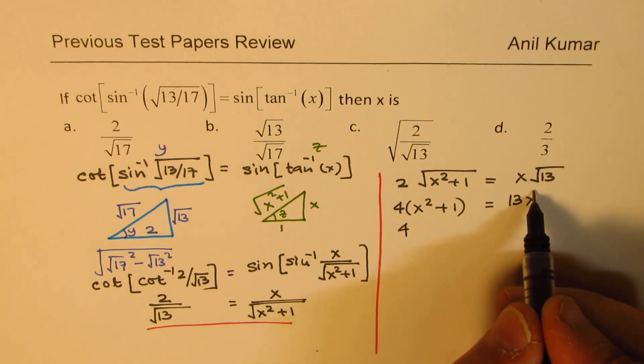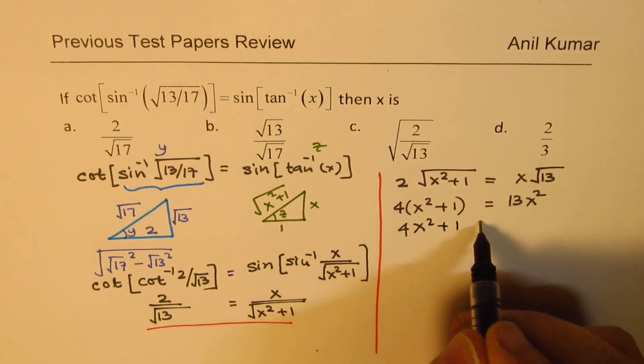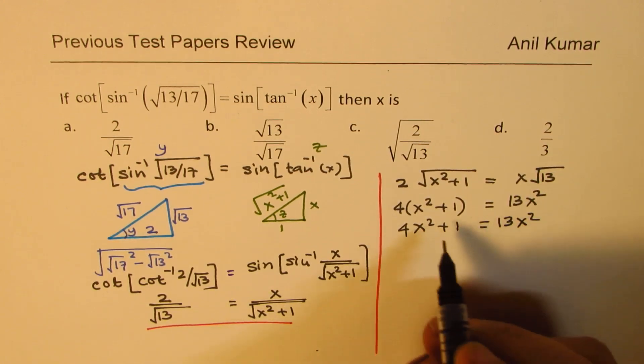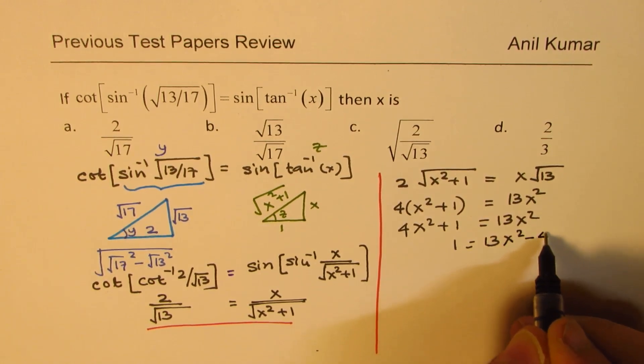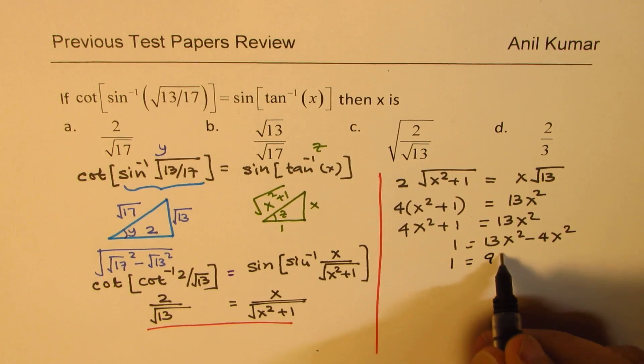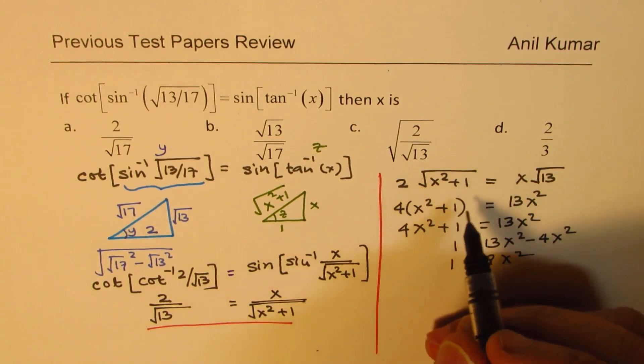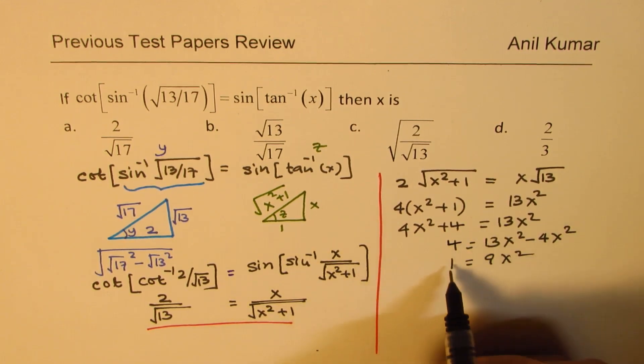When you square, this becomes square. So we get 4x square plus 1 equals to 13x square. Taking this on the right side, we get 1 equals to 13x square minus 4x square. Or 1 equals to 9x square. Sorry, when you open this, this is not 1 but 4. You have to multiply with 4 both of them. Correct. Sorry.